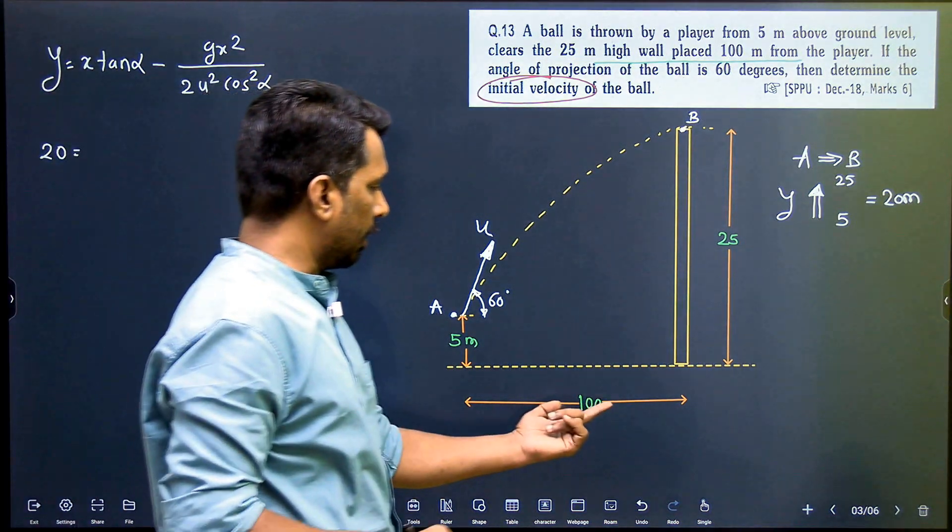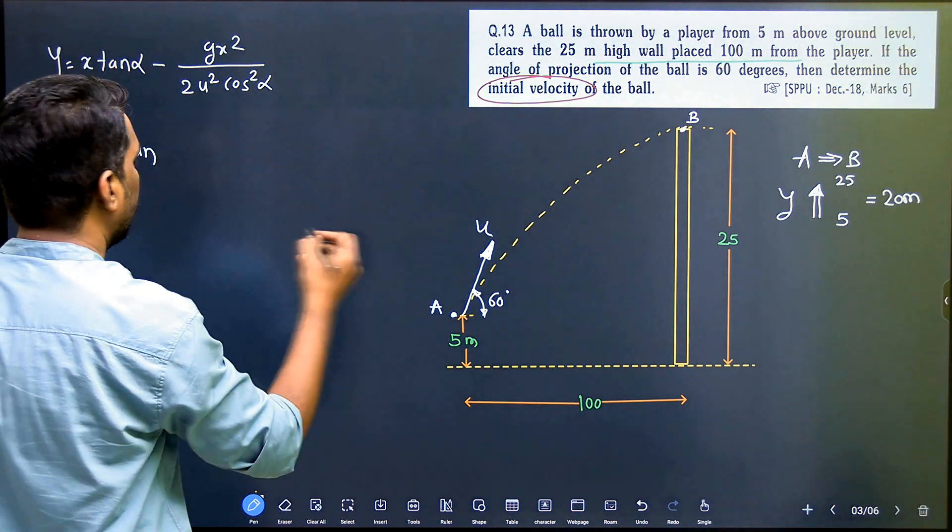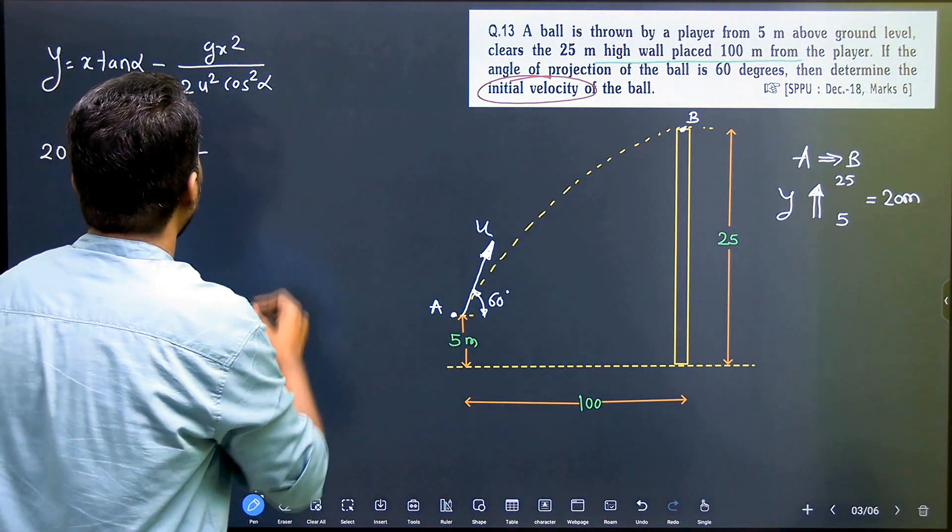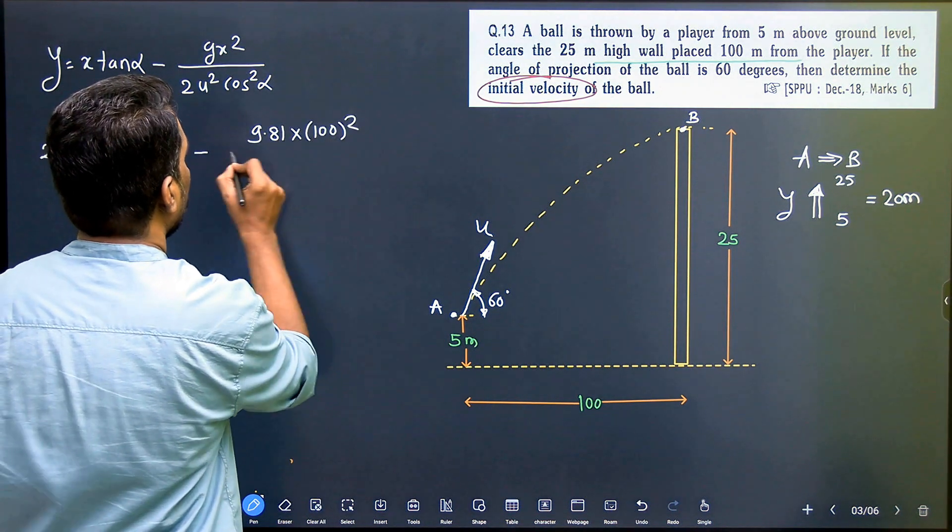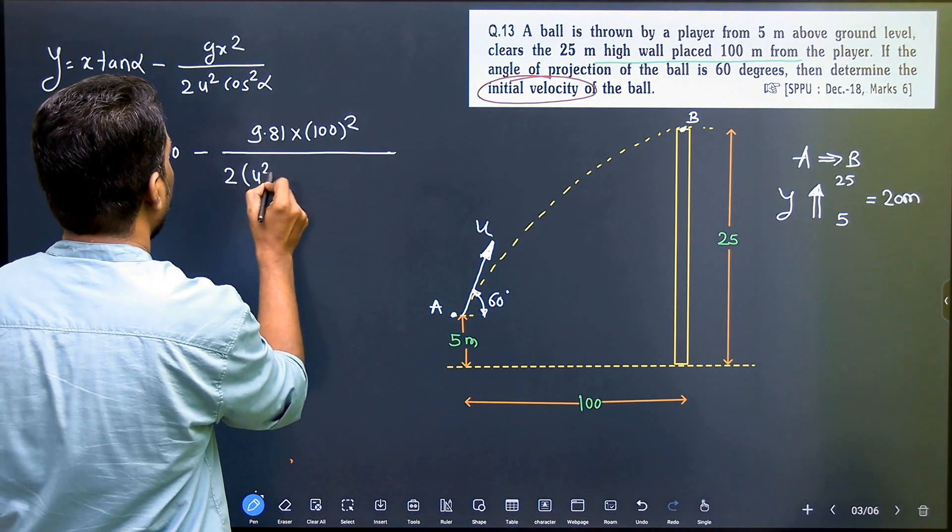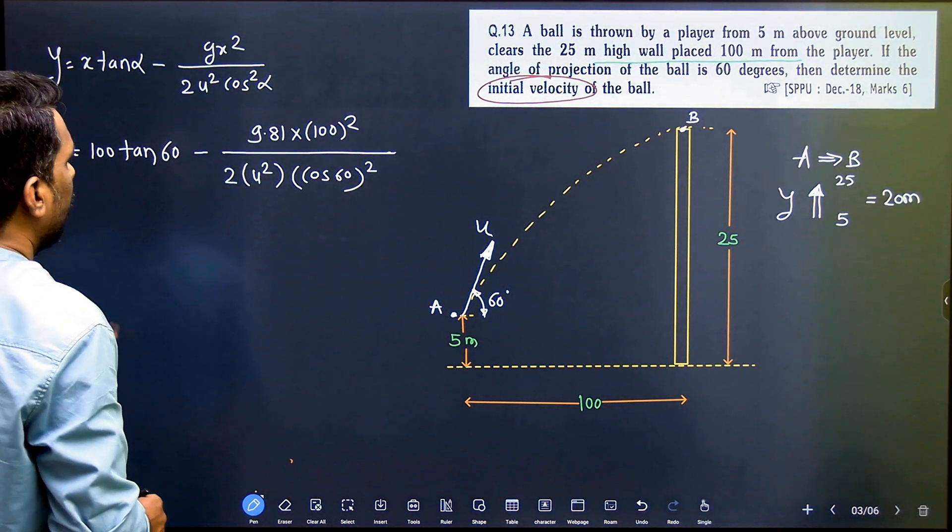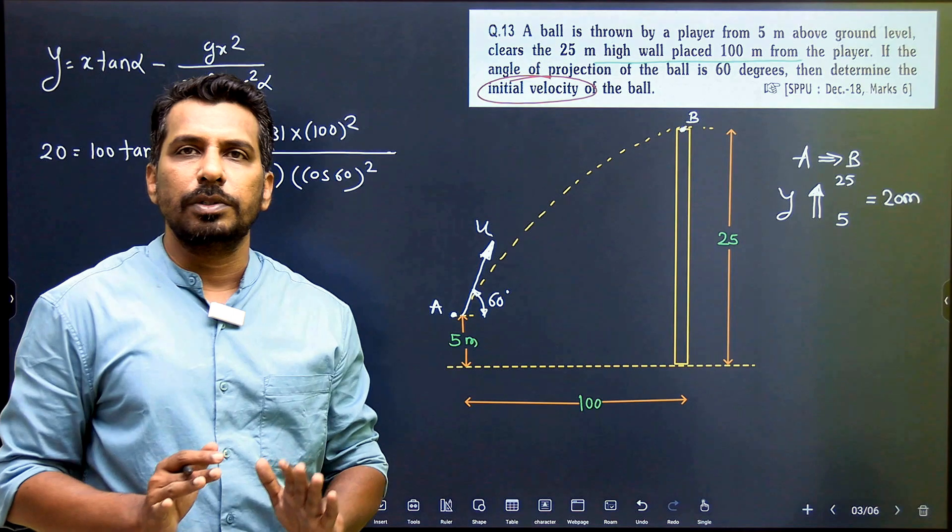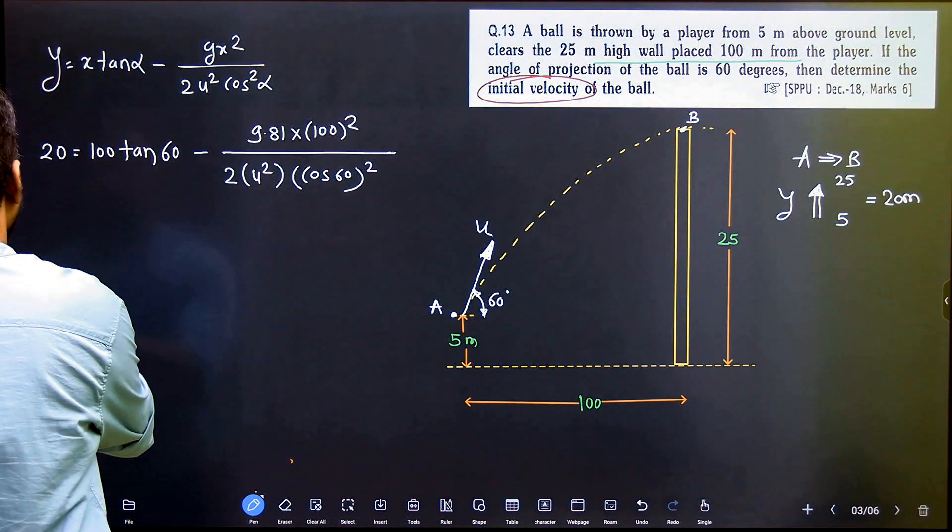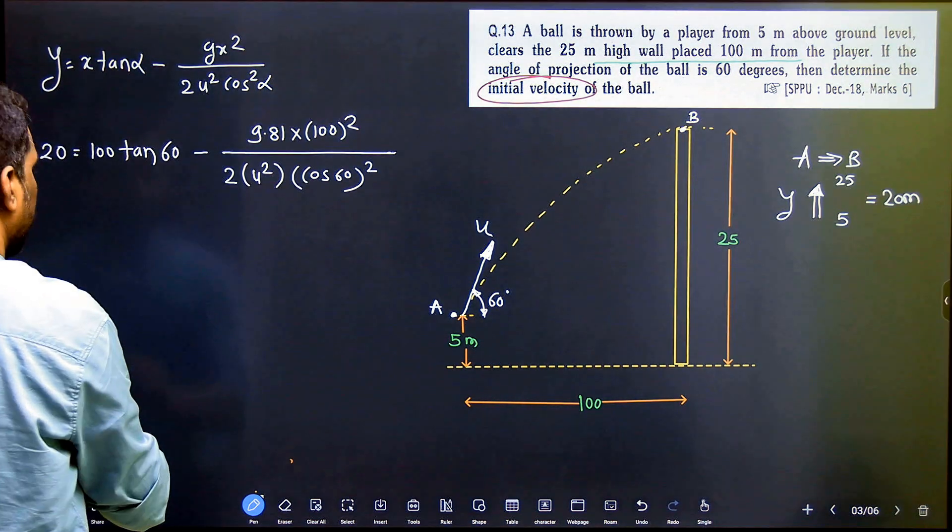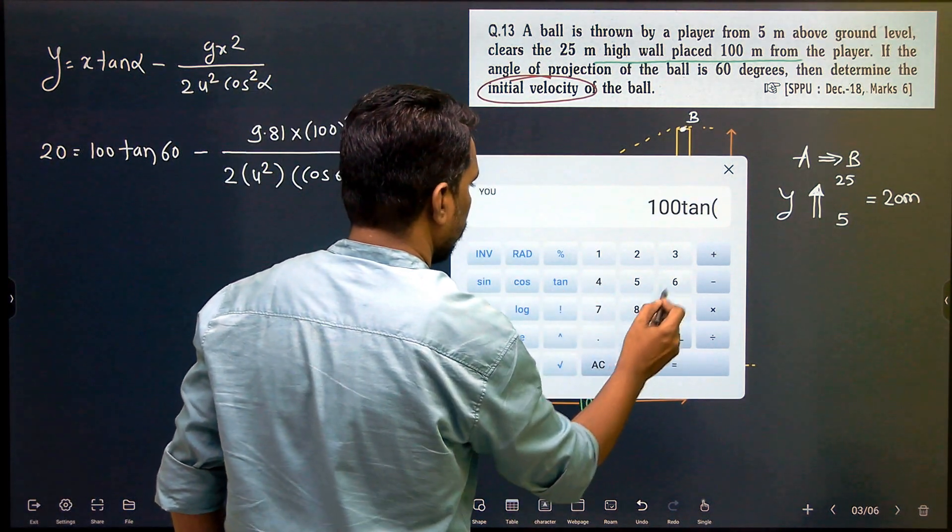It is equal to X tan alpha. X we know is 100, tan alpha value from the question is 60 degrees, minus G is 9.81 into X that is 100 square divided by 2 into U square. Cos 60 square. Only U is the only unknown in the whole equation.